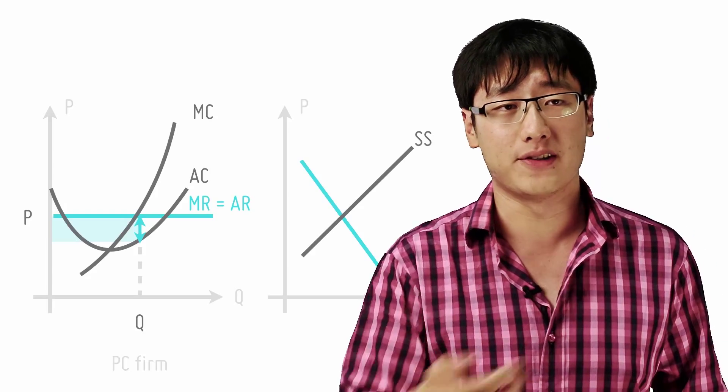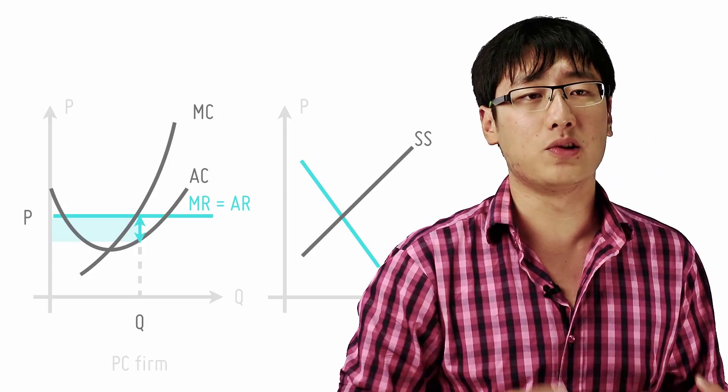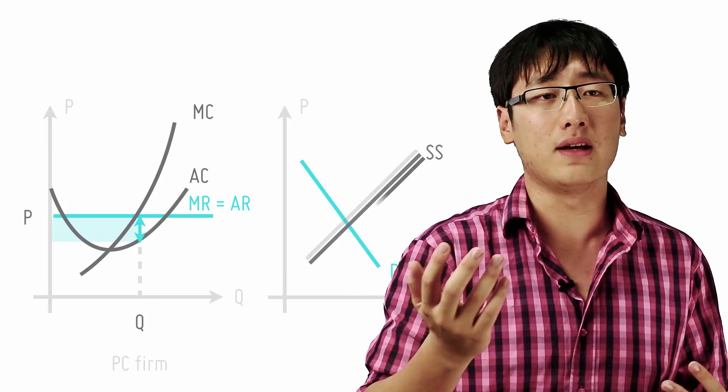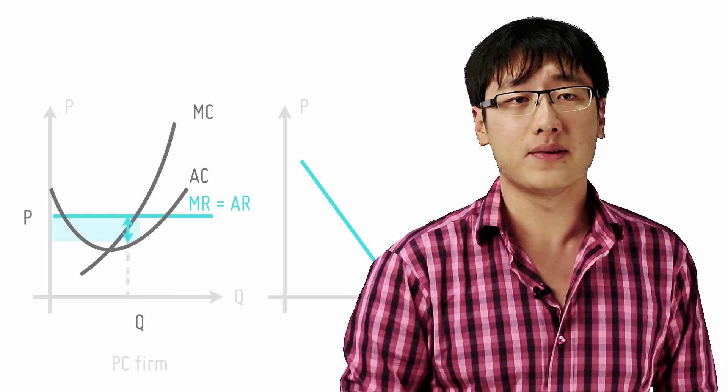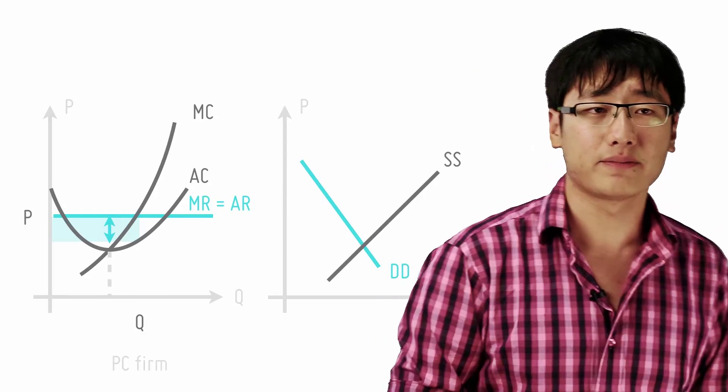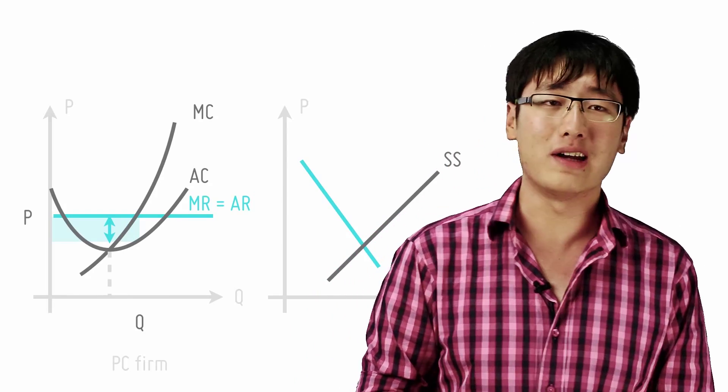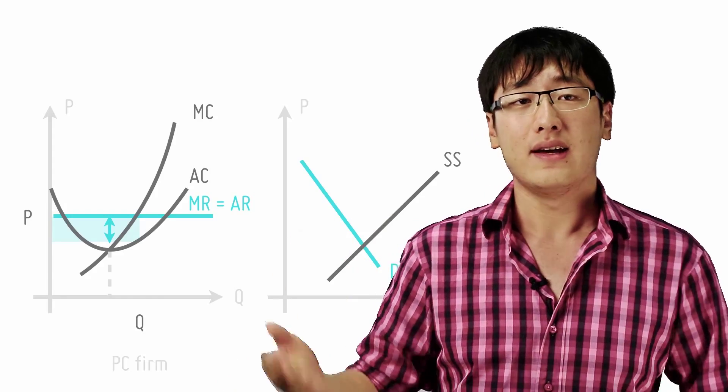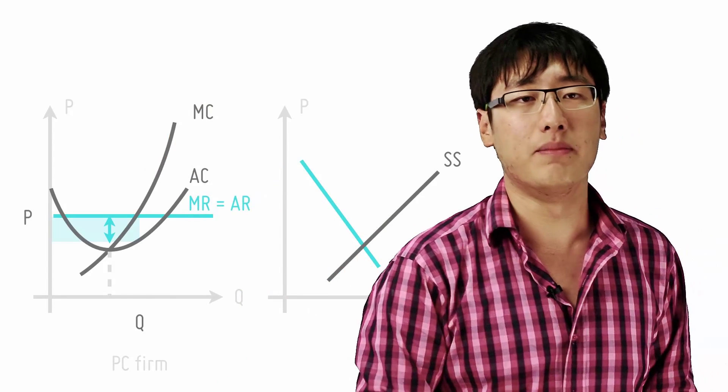Now, if firms are making supernormal profits, new firms will be attracted into the industry due to the profits. What then happens can be observed on the industry demand and supply curve. Supply increases due to the new entrants and they settle at a lower equilibrium price.